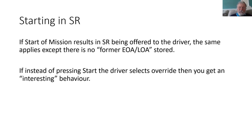If we look at starting in SR, then if the start of mission process results in SR being offered to the driver — that can be automatically in level one, or it could be the RBC offering it in level two or three — there is no former end of authority or limit of authority stored because you're in SR and then the driver operates the override control. And so you can proceed as far as you need to in order to pass that first place where you will get a movement authority: past the first signal in level one, or past the first stop marker or other location so you can get a movement authority in levels two or three.